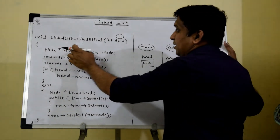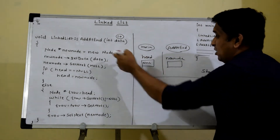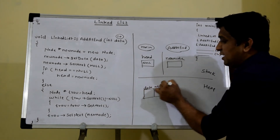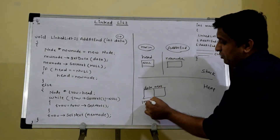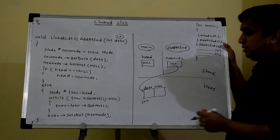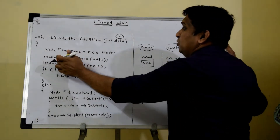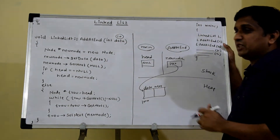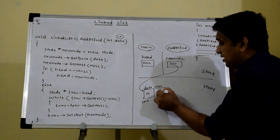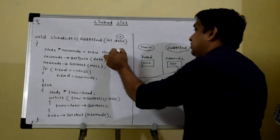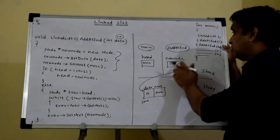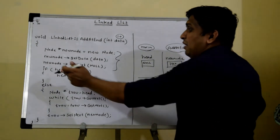new_node = new node means dynamic memory allocation is performed, so memory is allocated for one node. One node has two parts: data and next. new will return the starting address, say 1000, which is assigned to new_node, so this pointer is pointing to the allocated memory. Then new_node->set_data(data) assigns 10 to the data part, and null is assigned to the next part. So these three lines create a new node with appropriate values, and its address is stored in new_node.